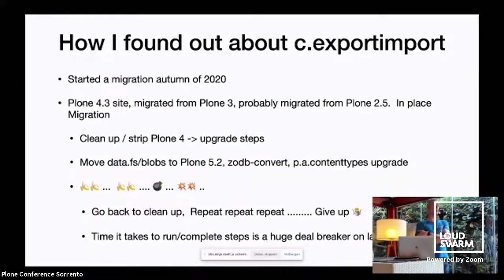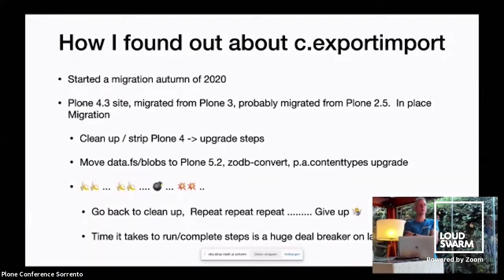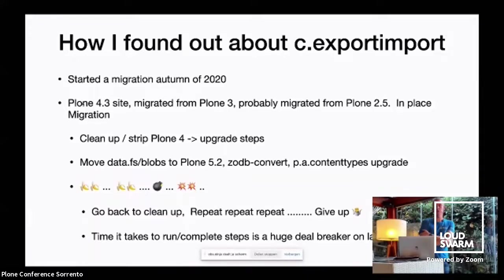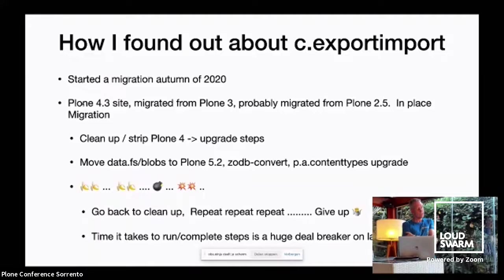I started a migration in autumn of 2020 with an in-place migration. It was a Plone 4.3 site, but probably there was data in there from Plone 2.5 or Plone 3. I did all the usual stuff: clean up first, strip your source site using upgrade steps. Then you move the DataFS and blobs to your version where you want to migrate to — Plone 5.2. Run ZODB convert to convert the DataFS from Python 2 pickles to Python 3 pickles. After that, you can run the Plone up content types upgrade, which is part of core Plone. And then you're done — unless you find a banana peel, and another banana peel, and another banana peel.